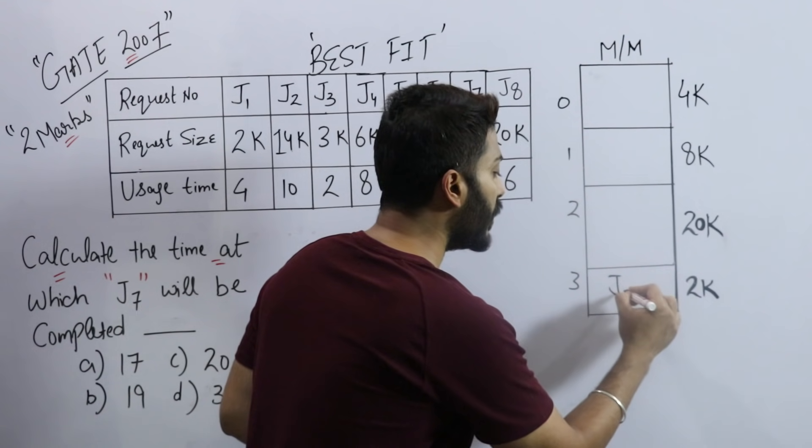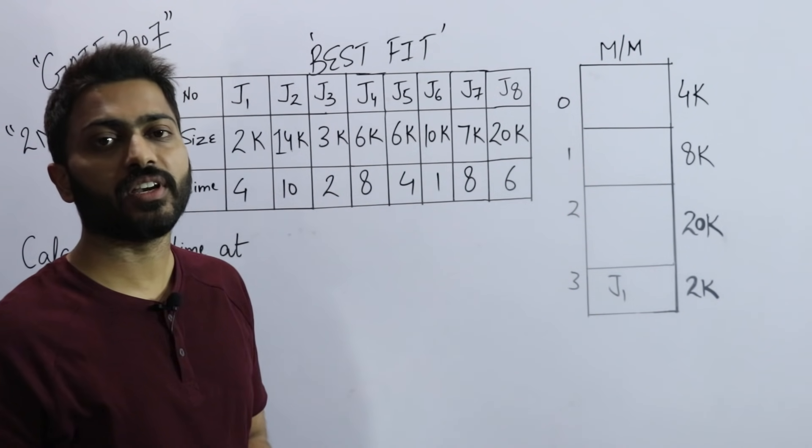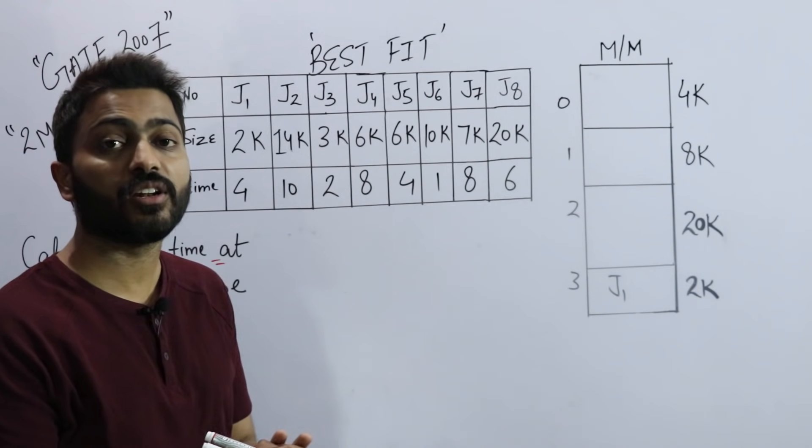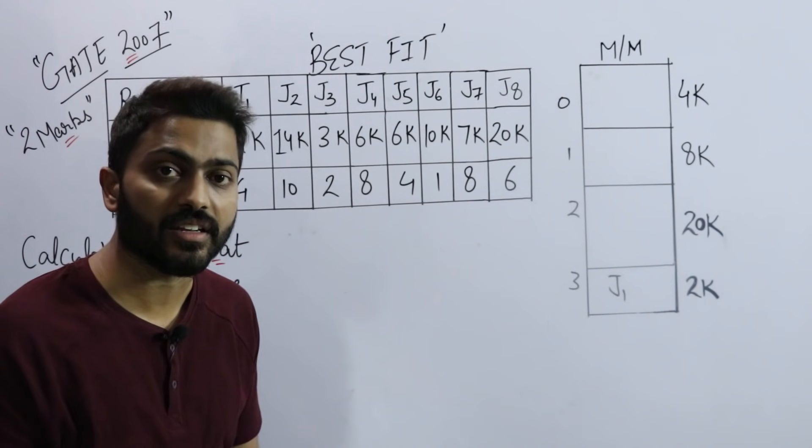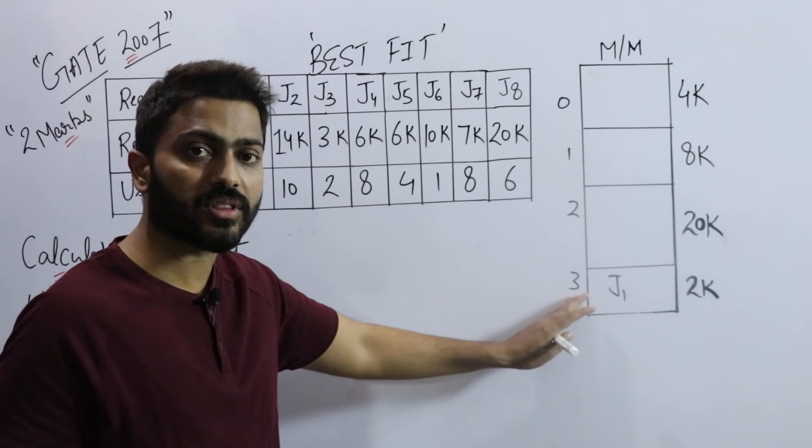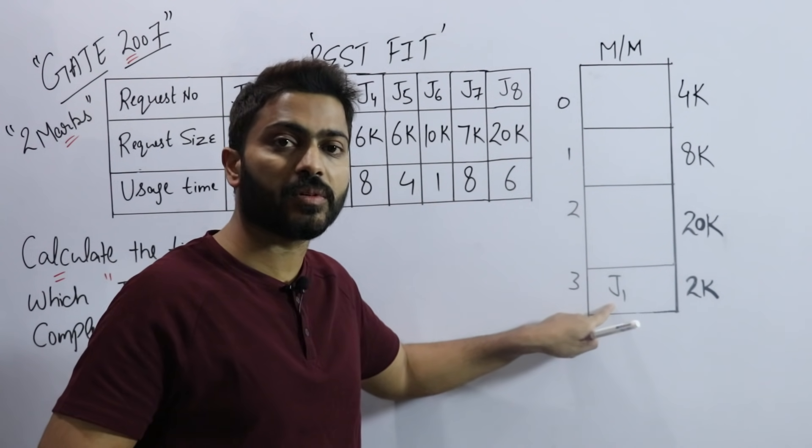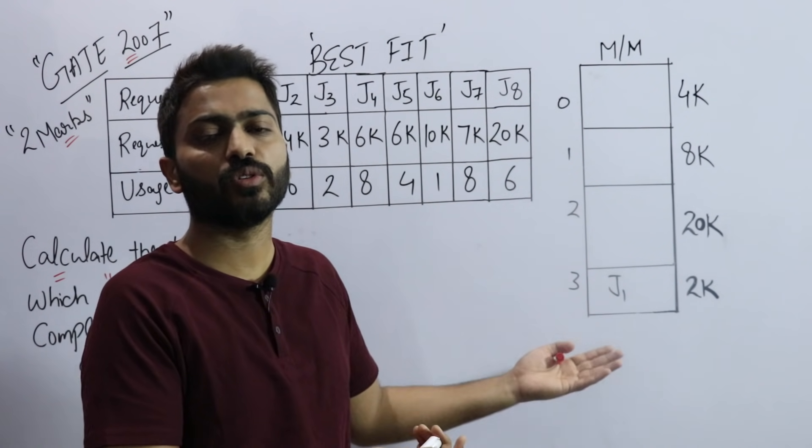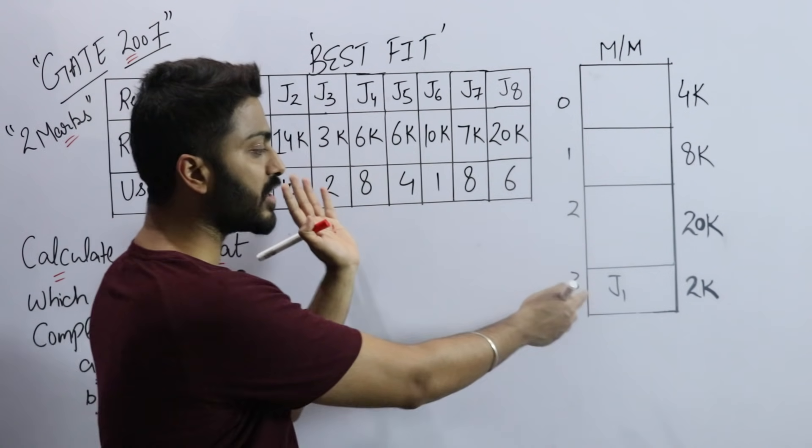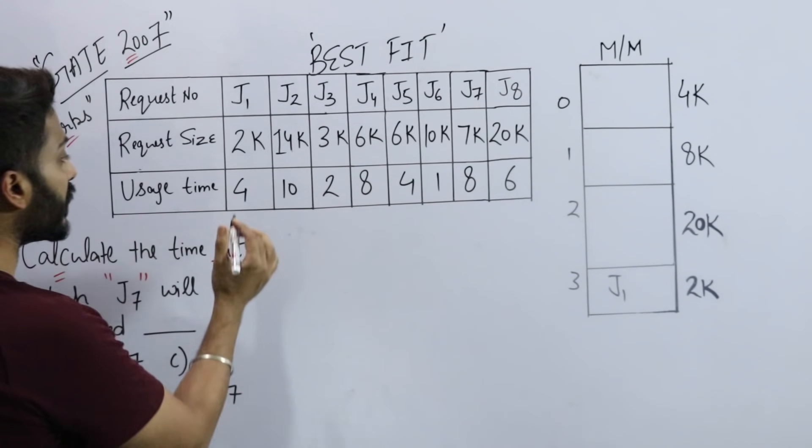I can properly fit J1 here. Since there's no internal fragmentation, this is the best fit concept - after placing the process, the space that remains should be least. Here no space remains because it fits exactly.